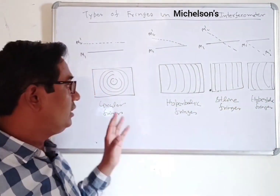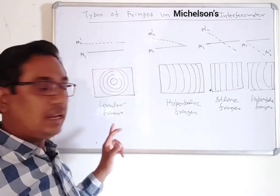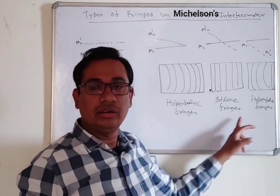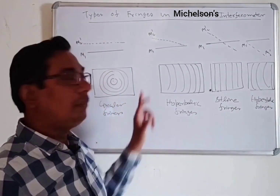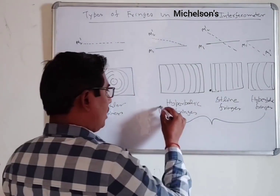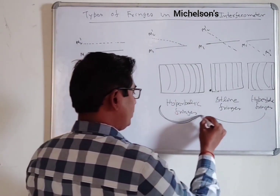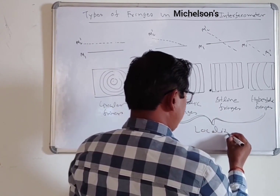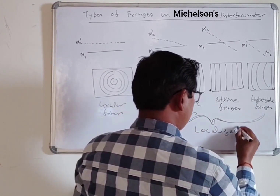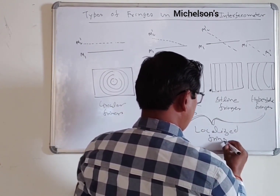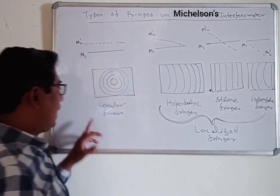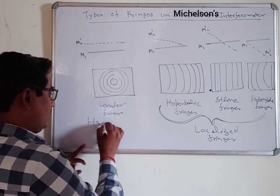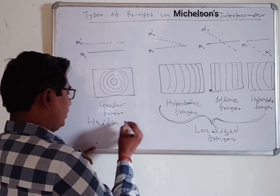So you can see that the Michelson interferometer generates four types of fringes, and all of these fringes are localized fringes. The circular fringes are also known as Haidinger fringes.